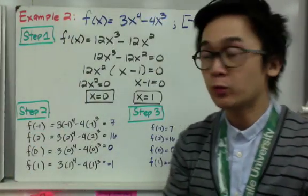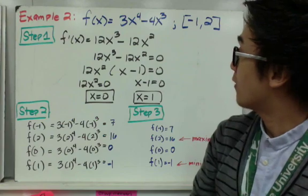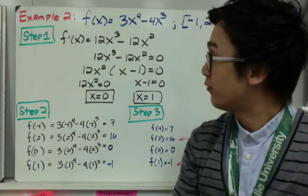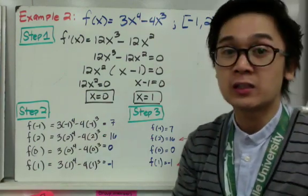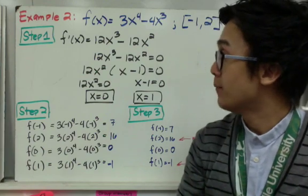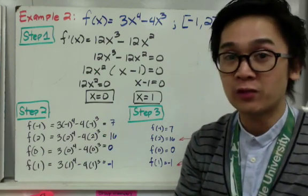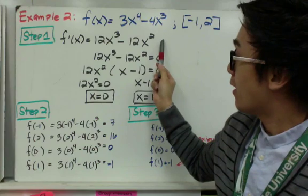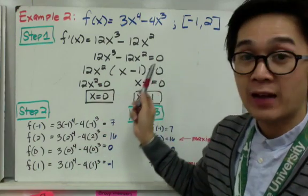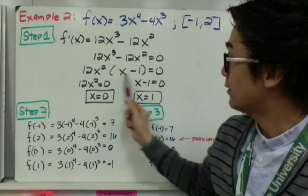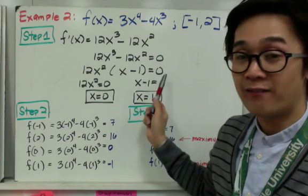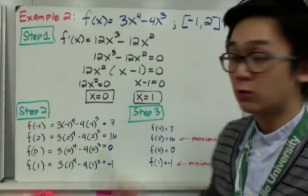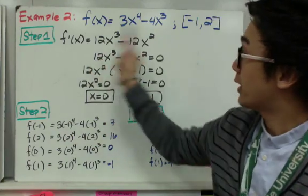For the second example, we have the polynomial 3x to the fourth minus 4x cubed on the closed interval negative 1, 2. Using the same three steps, the first step is to find the first derivative: f prime of x is 12x cubed minus 12x squared. Setting this to 0 and factoring gives 12x squared times (x minus 1) equal to 0. Using the zero product property, the critical numbers are x equal to 0 and x equal to 1.